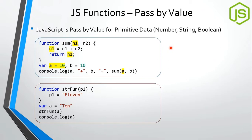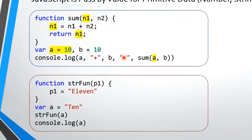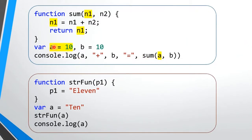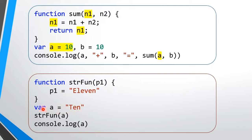Whenever we discuss function parameters, the question of pass-by-value versus pass-by-reference comes up. JavaScript is pass-by-value for primitive data — numbers, strings, and booleans. Only the values are passed, a copy is created inside the function in a local variable, and the original data is not affected. So if we pass a variable a with value 10 to a function and modify it inside as n1, the original variable is not changed. Strings behave the same way — modifying p1 inside the function does not change the original.